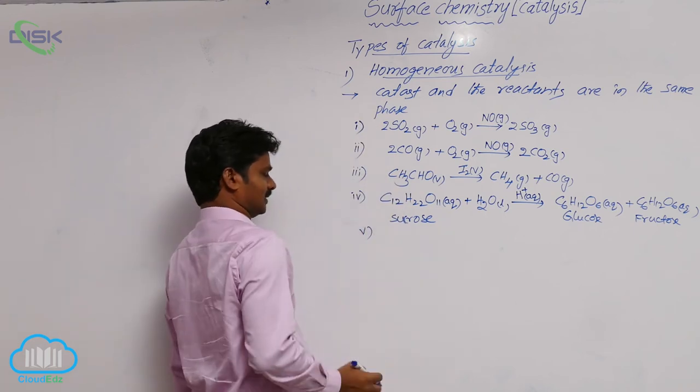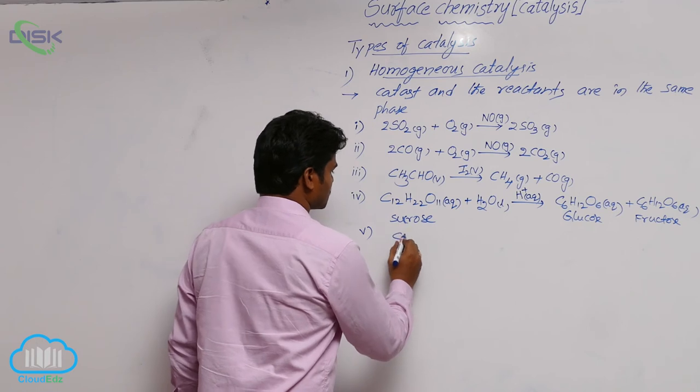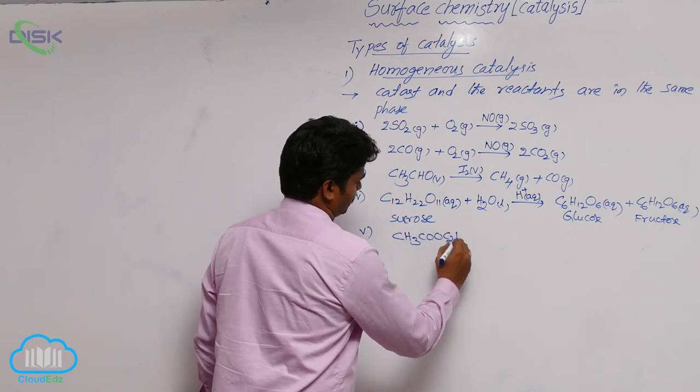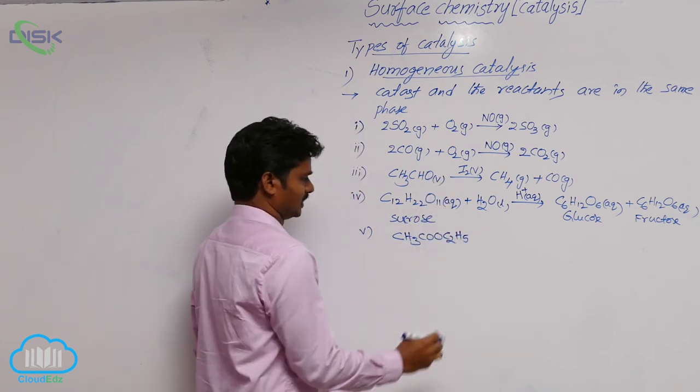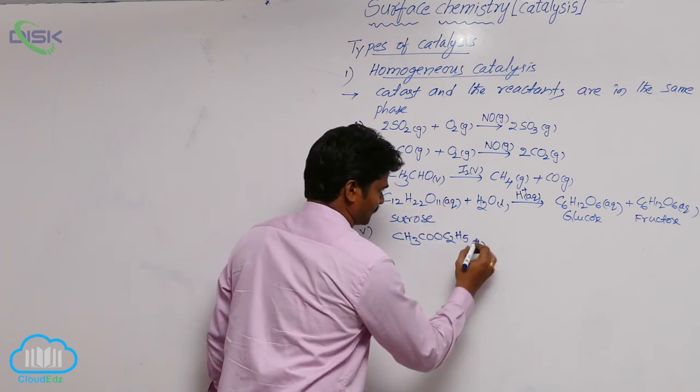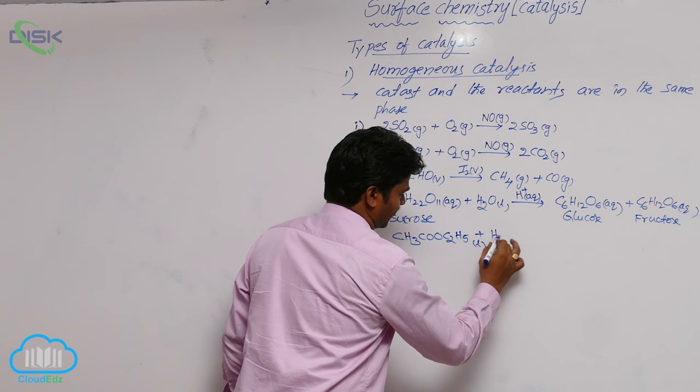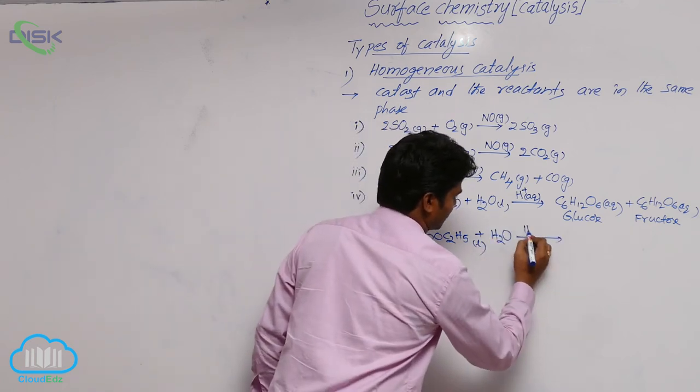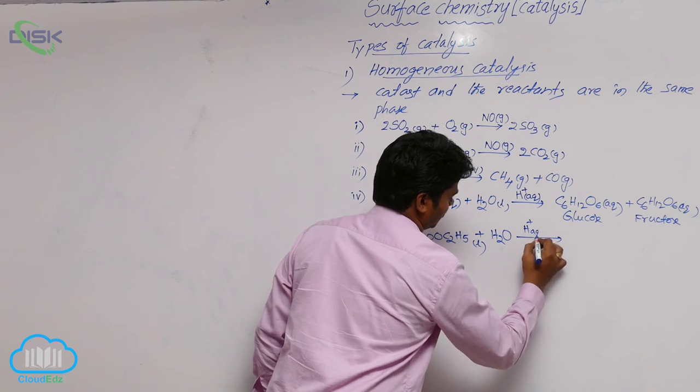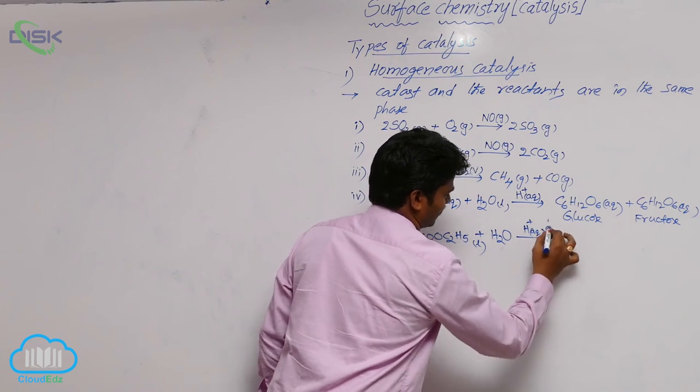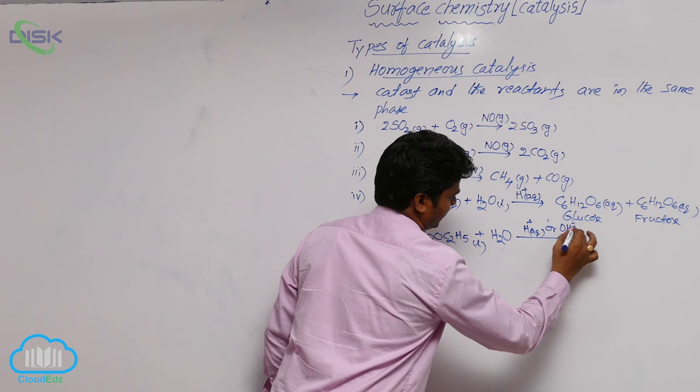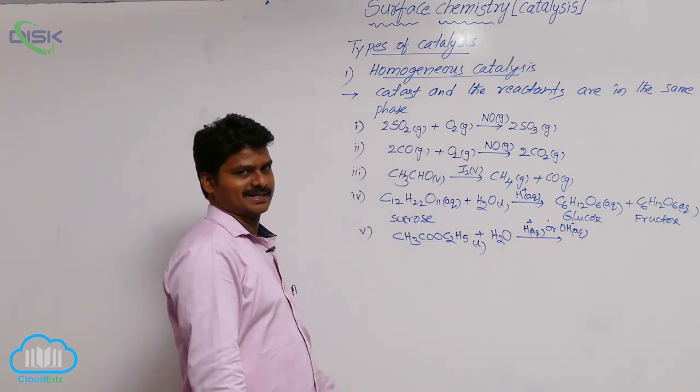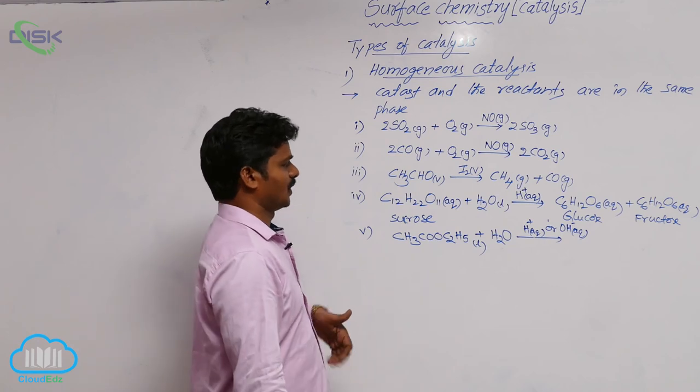One more example: CH3COOC2H5, it is ethyl acetate, which is a liquid. This on hydrolysis, in the presence of an acid or base, we can use here acid or a base as catalyst. Ester hydrolysis may be acidic or basic. So what are the products here?